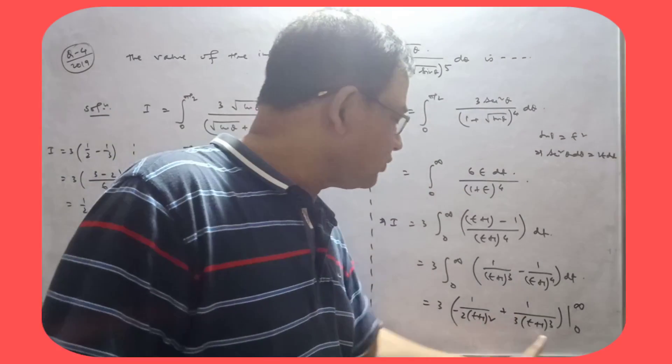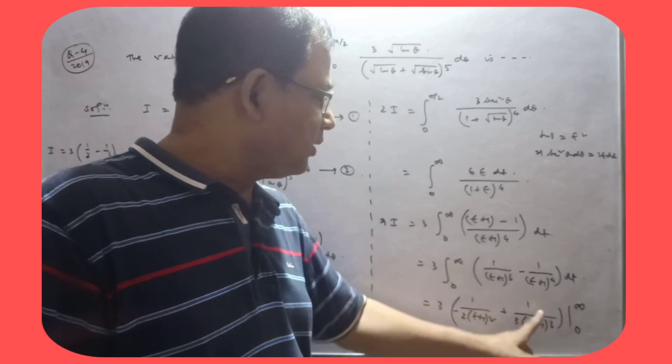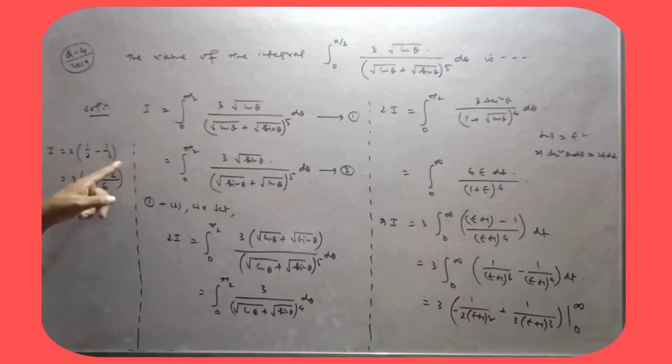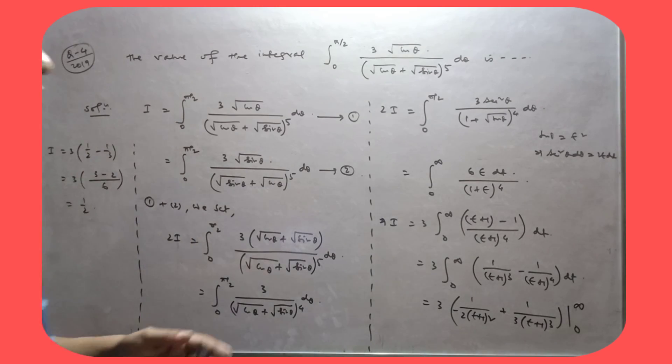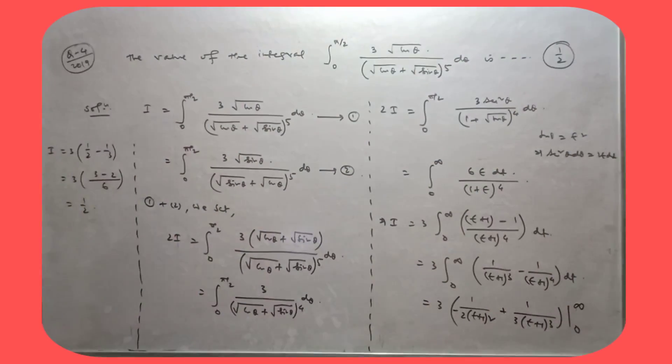So that ko jab infinity put karo ga, ee to 0 ho gya. Lekin jab 0 put karo ga, yeh kya ho gya? Yeh 1 by 2, yeh 1 by 3 hai ho gya. To yeh 1 by 2 minus 1 by 3, 1 by 2 minus 1 by 3 isko simplify kiya. So the value of this, so that is, is half. Iska jo value hai, so that is, is half.